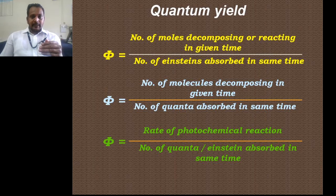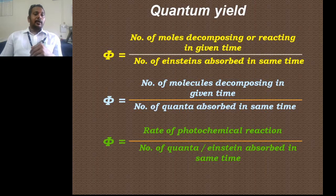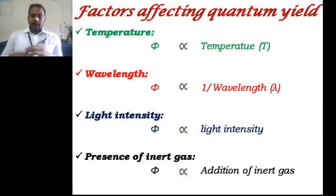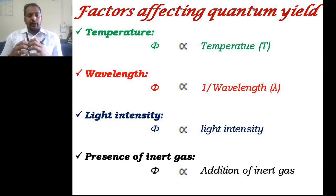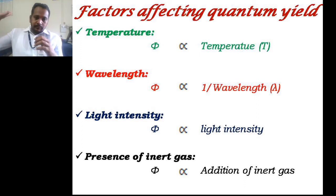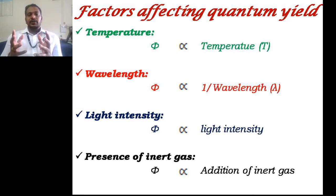Phi is the ratio of number of moles decomposing in a given time divided by number of Einsteins absorbed in the same time, or equivalently the ratio of number of molecules decomposing divided by number of quanta absorbed in the same time. For certain reactions, it is observed that the value of phi is sometimes much higher than one — on the order of 10⁴ or 10⁵ — and sometimes very much less than one, on the order of 10⁻³ or 10⁻⁴. This deviation is due to factors that disturb or deviate the quantum yield from unity.